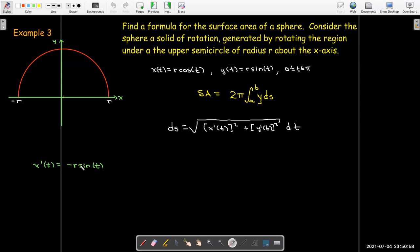And so x prime is just negative r sine of t, y prime is r cosine of t. I can factor out the r squared under the radical sign. And what's left would be sine squared plus cosine squared, which is just 1. So ds just turns out to be r dt. So I'm going to take the surface area. It's going to be 2 pi times the integral from 0 to pi y, which is just r sine t, ds, which we found to be r dt.